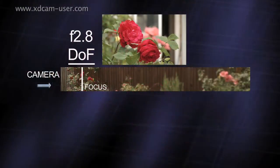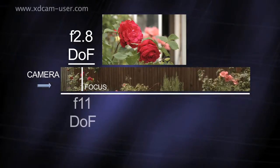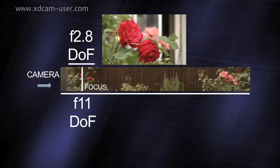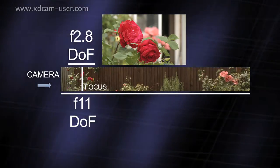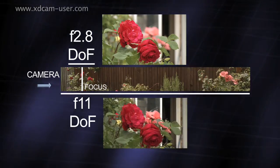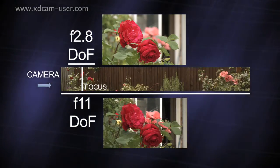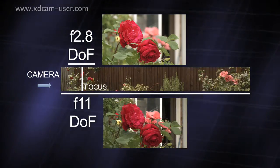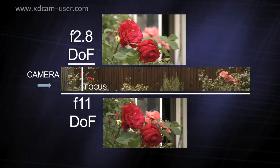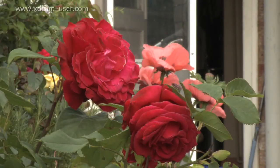With the iris nearly closed, say between f11 and f16, you'll have a much greater depth of field with a much deeper range of objects in focus. Now the background flowers are much less blurred — the image has a greater depth of field.